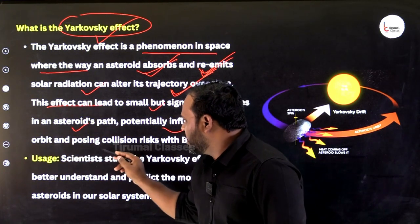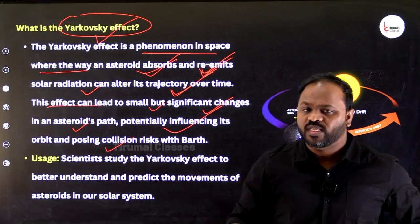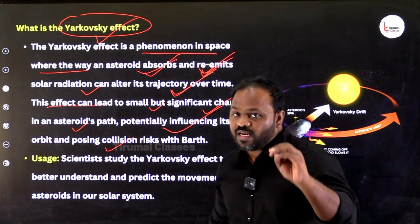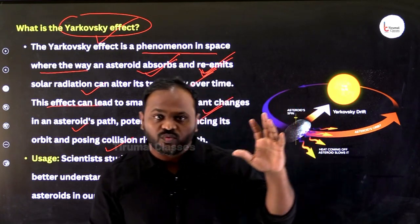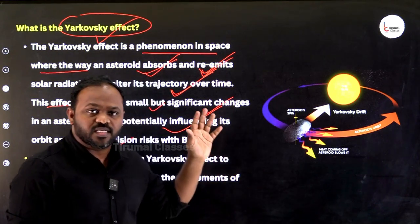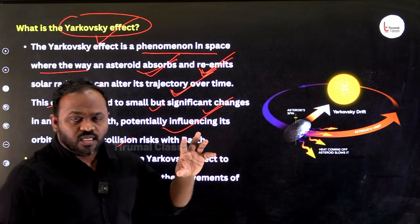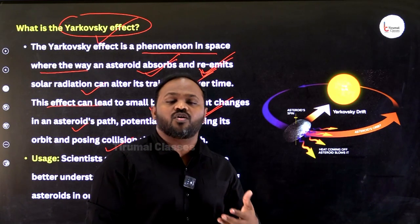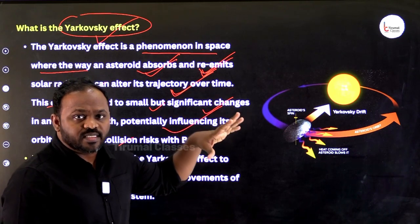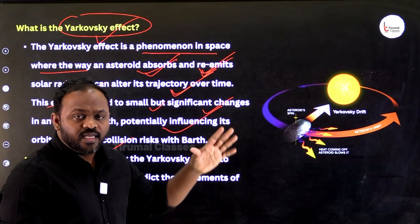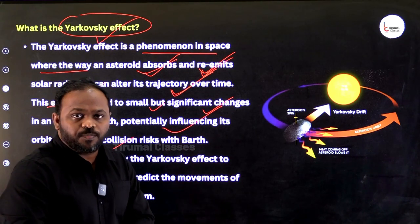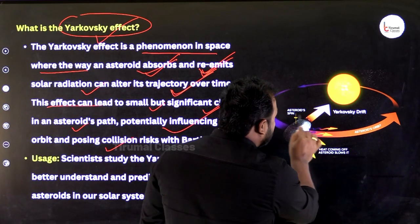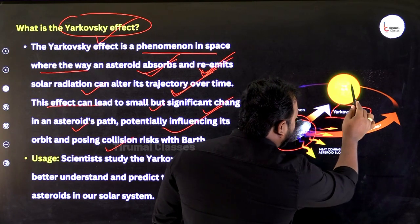This effect can lead to small but significant changes in the asteroid's path, potentially influencing its orbit and posing a collision risk with Earth. Whenever any asteroid is moving towards Earth, because of incoming solar radiation there is absorption and re-emission, which causes the Yarkovsky Effect, leading to the change in the path of that asteroid — this is also called the asteroid Yarkovsky drift.